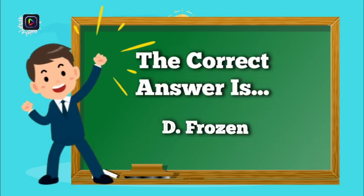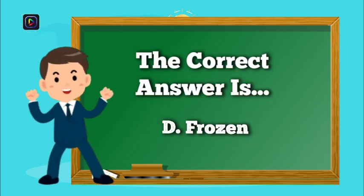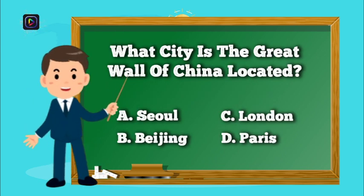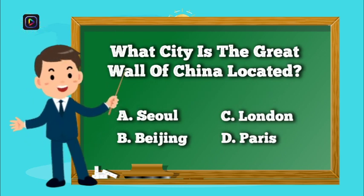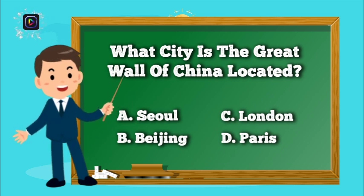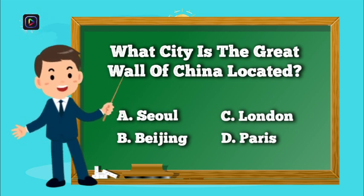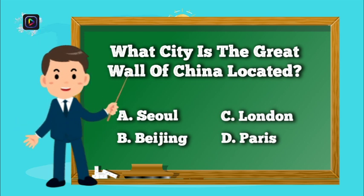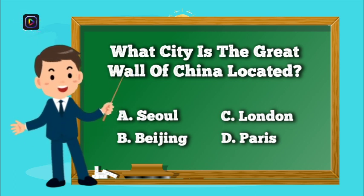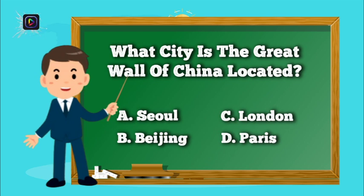The correct answer is D, Frozen. Question number 5. What city is the Great Wall of China located? Is it A, Seoul? B, Beijing? C, London? Or D, Paris?